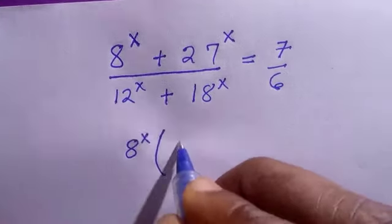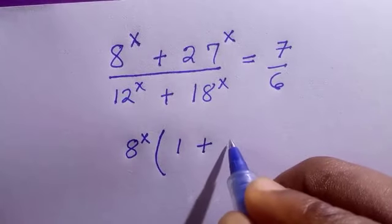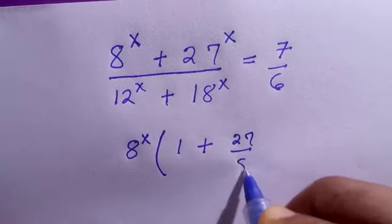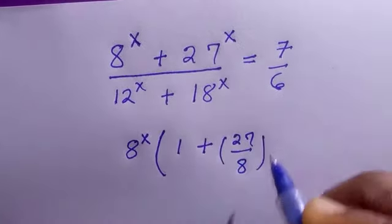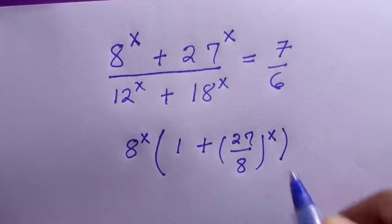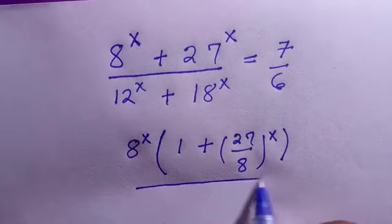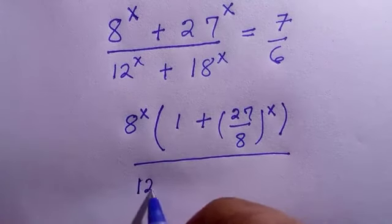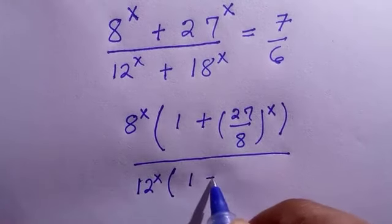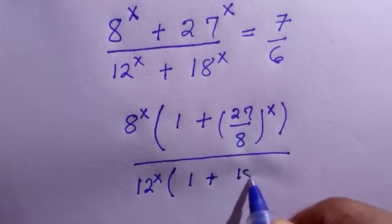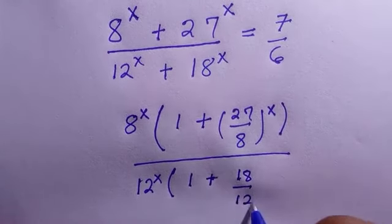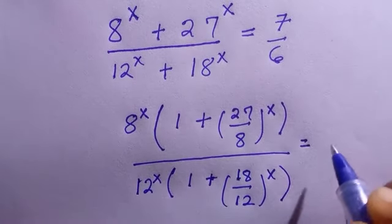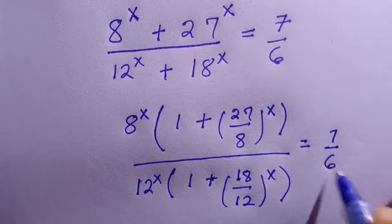What we do is, if I factorize out 8 raised to power x, then we have 1 plus 27 divided by 8, all raised to power x. And at the denominator we can take out 12 raised to power x, giving bracket 1 plus 18 divided by 12 raised to power x, equals 7 divided by 6.